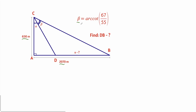Let's start by taking a look at angle C. We can write down that angle C is equal to angle alpha plus angle beta. That means we can write that the tangent of angle C equals the tangent of alpha plus beta, and using the definition of tangent it's the opposite side AB which is 2070 over the adjacent side which is 630 meters.